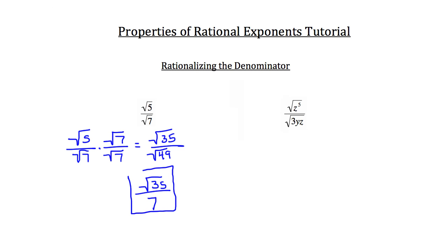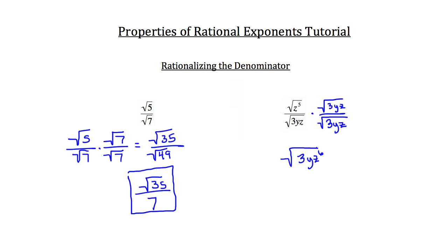In this case, we've rationalized the denominator and gotten rid of the square root on the bottom. For the problem on the right, remember to get rid of the root on the bottom, we multiply both the numerator and denominator by the same root — in this case, the root of 3yz. On top, the root of z to the fifth times the root of 3yz simplifies to 3 times y times z to the sixth, all under the root. That's written over root 3yz times root 3yz on the bottom.